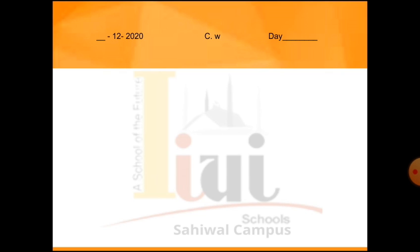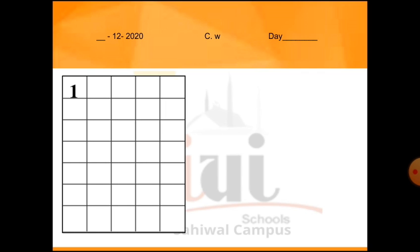Ab hum us ke upar aapne sabse pehle date aur day write karna hai. Day aapne woh write karna hai jis din pe aap kaam kar rahe hain, aur date aapne woh write karni hai jis pe aap aaj kaam kar rahe hain. Theek hai? And now today topic is number 13. Jab hum math ka kaam karte hain toh kaun si copy pe kaam karte hain? Boxes wali copy pe — pata hai na aapko? Ab humne boxes wali copy pe kaam start karna hai. Pehla number jo aapka teacher ne write kiya hua hai woh hai 13.